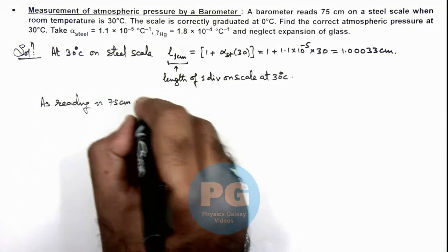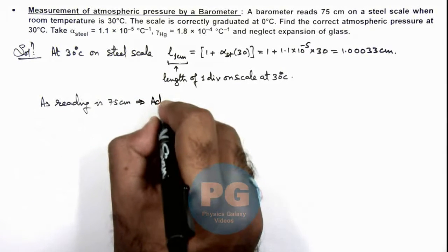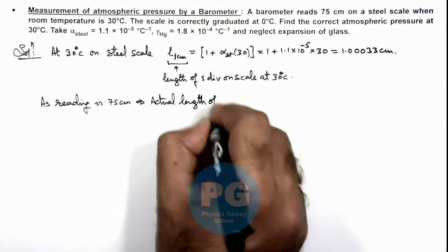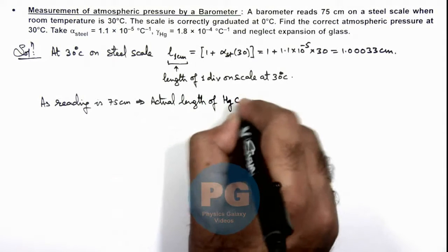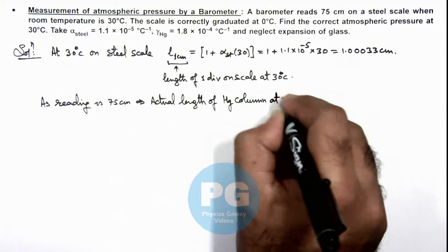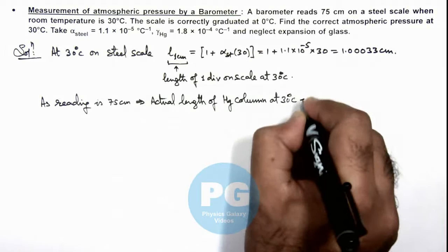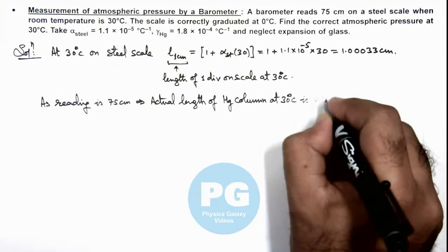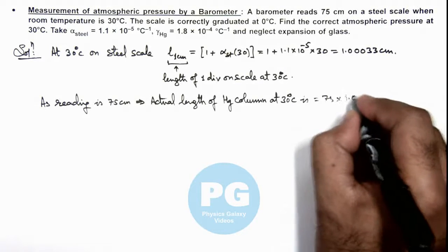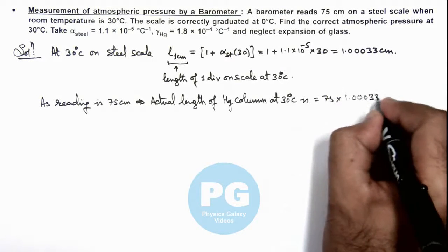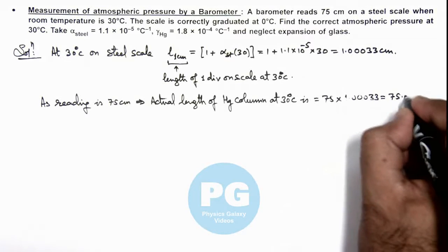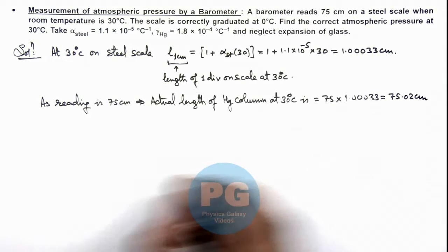This implies the actual length of the mercury column at 30 degree centigrade is 75 multiplied by the length of 1 centimeter, which is 1.000033, giving us 75.02 centimeter.